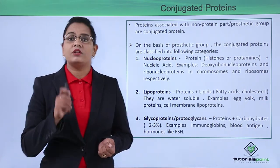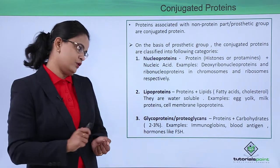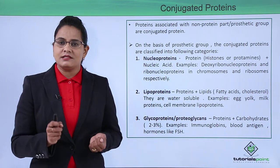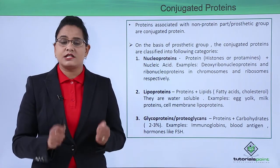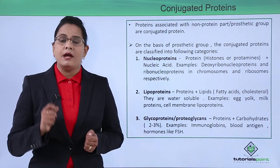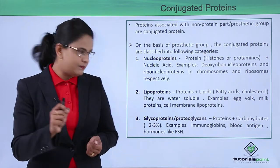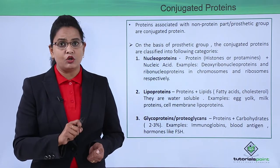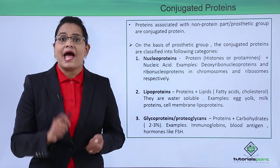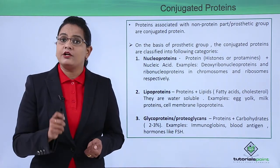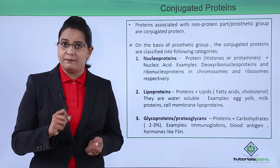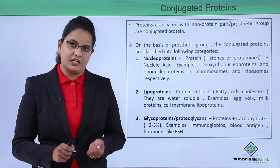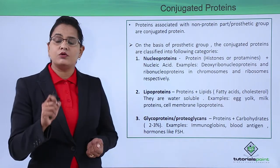The next category is glycoproteins, also called proteoglycans. This means a protein is associated with a carbohydrate, but the percentage of carbohydrate is just two to three percent. Examples of glycoproteins are immunoglobulins — the antibodies — and the antigens of blood. The blood groups A, O, AB, and B are determined by antigens, and these antigens are glycoprotein in nature. Another example is hormones like follicle stimulating hormone.